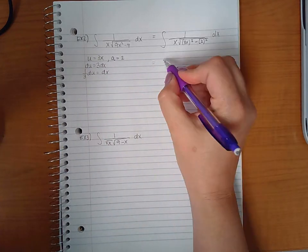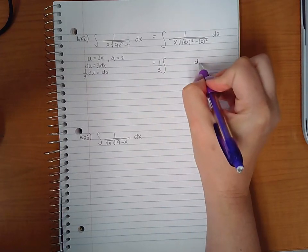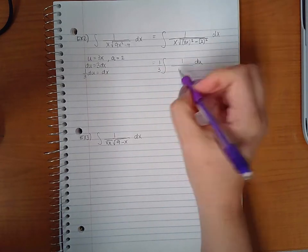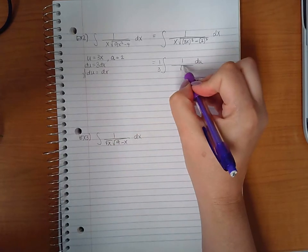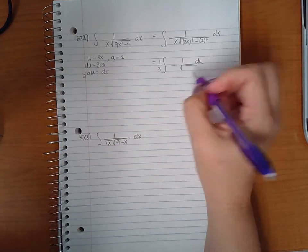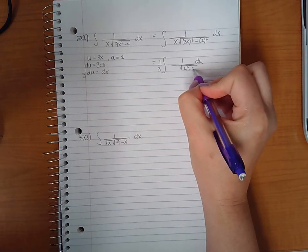So this becomes the integral of 1 third du over, we have another problem here. Let's continue there. We'll finish. So we get u squared minus a squared.